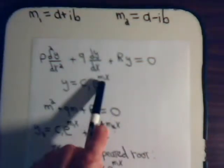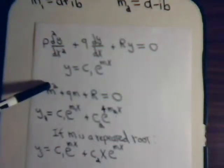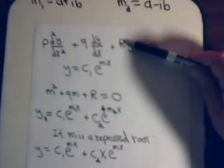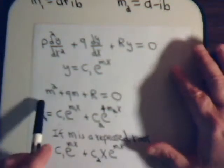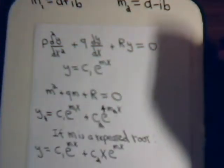Now, what is m? How do we determine what it is? As you saw in the introduction video, the derivatives are replaced with m. This is a second-order derivative, so it's m to the second power. This is a first-order derivative, so it's m to the first power, which is just m. Here we have no derivatives — we can think of it as a differential to the zero power, so we would have m to the zero power, which is just 1. So the differential equation becomes this auxiliary equation. It's a quadratic equation, and we solve it to determine what m is.